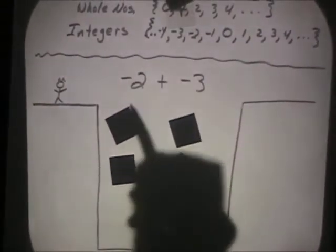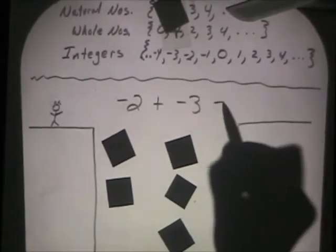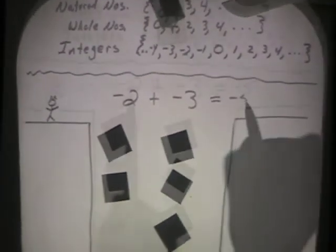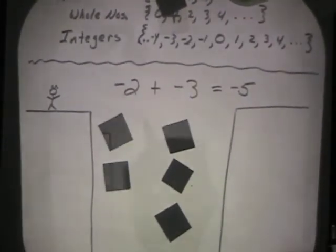Negative five. Negative five, right. So negative two plus negative three more gives you a total of negative five. So negative plus another negative is still negative. You're throwing negatives into the pit.